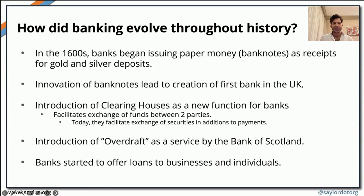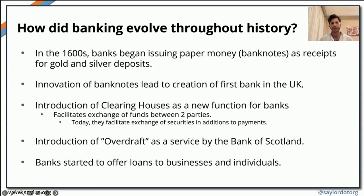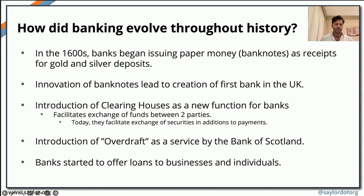We then moved towards joint stock banking institutions, which were mostly privately held banks. One of the very first banks in this category was the London and Westminster Bank in the UK. However, this bank did not have the authority to issue currency like previous banks. Issuance of currency then became a monopoly for central banks and not for commercial banks.